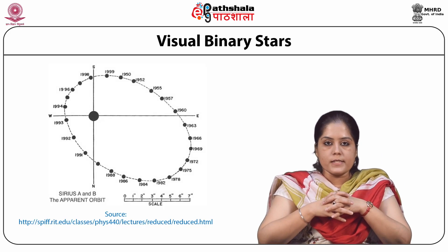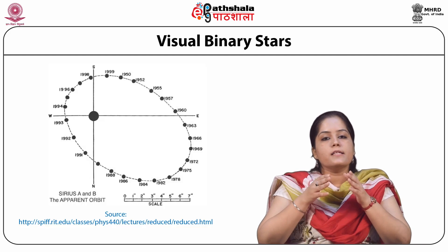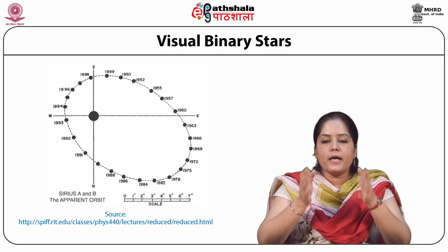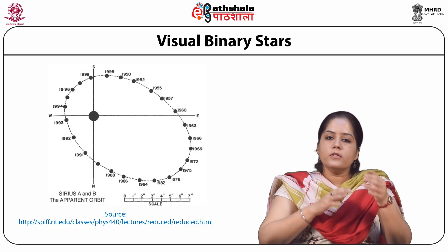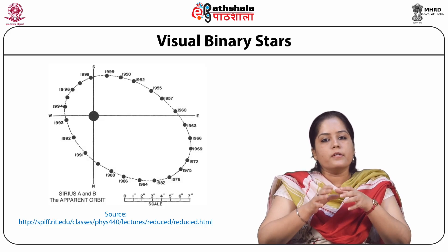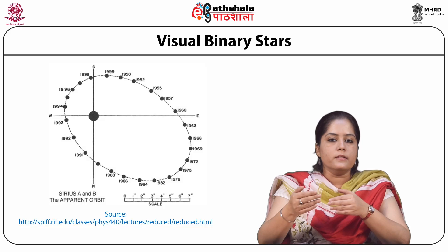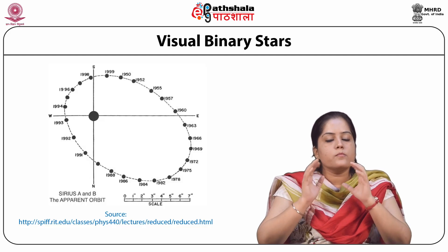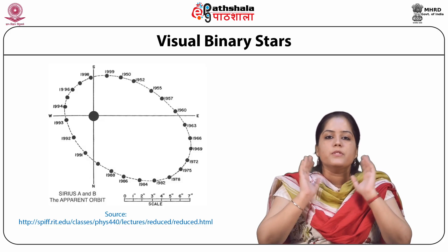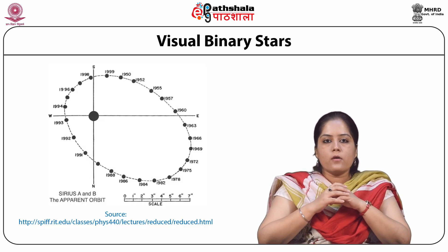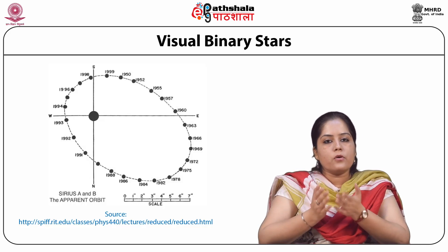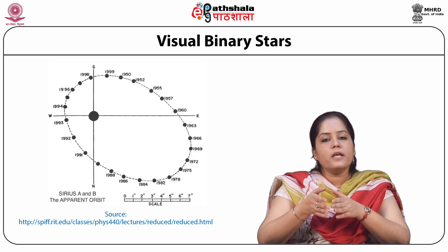Visual binary stars: a group of stars that can be identified as a binary with the unaided eye or with the help of a telescope is called a visual binary group. According to the law of classical mechanics, both stars must execute elliptic orbits around the center of mass of the system. However, if one component is much more massive than the other, the more massive component makes a small ellipse about the center of mass while the less massive component goes around in a larger elliptic orbit. The more massive component is called the primary, and the less massive component is called the companion.